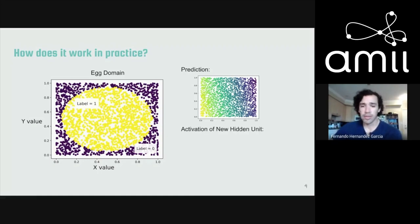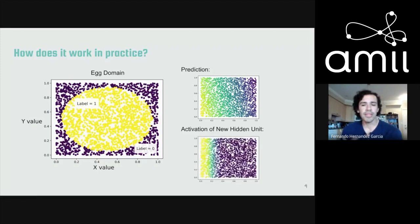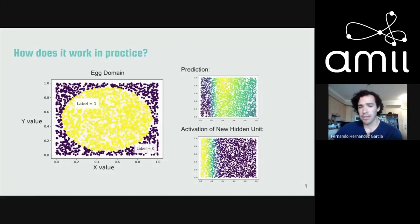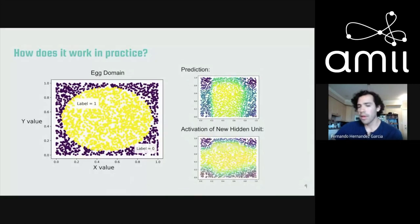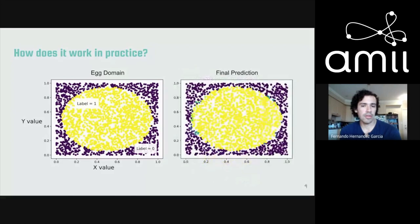So we add a hidden unit. By maximizing its correlation with the residual error, we obtain an activation pattern where this unit is most active on the left side of the domain. After adding it to the network and retraining the output layer, we get an improved prediction. We then add another hidden unit with a different activation pattern, retrain the output layer again, and this process continues until we get a prediction that looks pretty close to what we want.